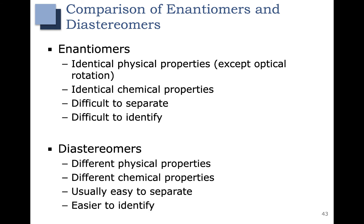If you have a pair of diastereomers, however, they're usually quite different. They will have different melting points and boiling points — sometimes these melting points will be wildly different, and other times they will be closer. They will also typically have different chemical properties and react a little bit differently. They are often easy to separate and easier to identify, though this isn't always the case.